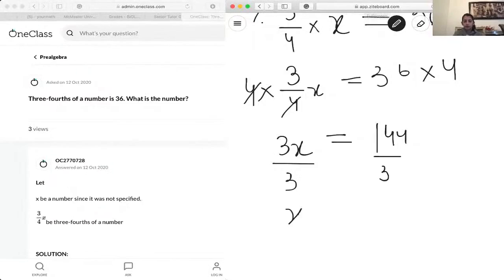And we're left with, this gets cancelled out, and we're left with x equals 144 divided by 3, which is 48.